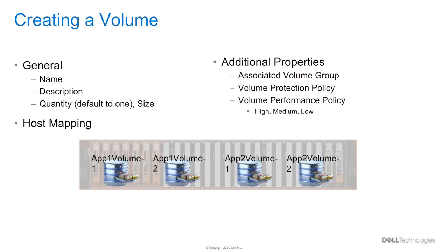The performance policy determines how many system resources the volume will receive if the processing power of the system becomes fully utilized. This is a relative ranking, so resources with a high value receive more than those with medium or low. This distribution of system processing power only happens if the system becomes fully utilized. Otherwise, there is no difference between resources with different performance policies. Users can also select hosts to map the volume to at the time of creation, or choose to map the volume at a later time.